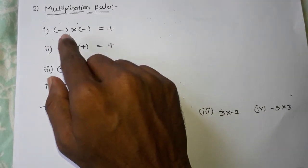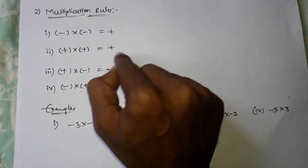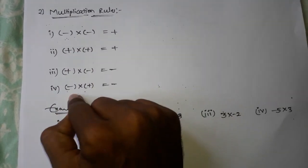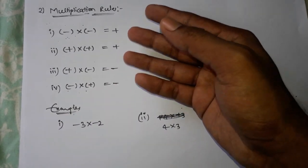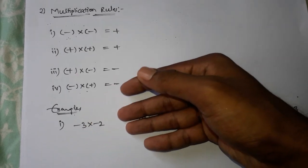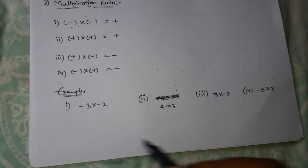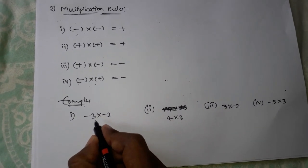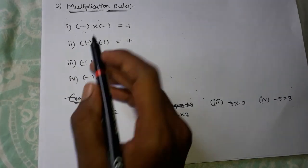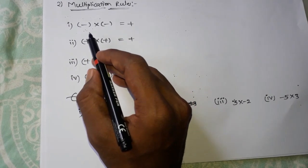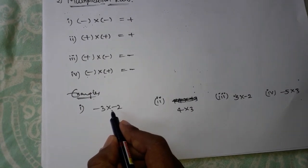Multiplication sign rules: plus into minus is minus, minus into plus is minus. For example, minus 3 into minus 2 — minus into minus equals plus. When two numbers are both minus, multiply and the answer is positive.